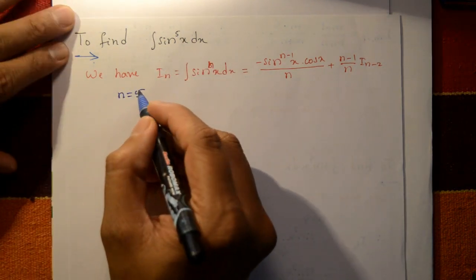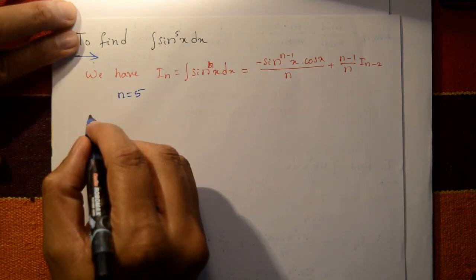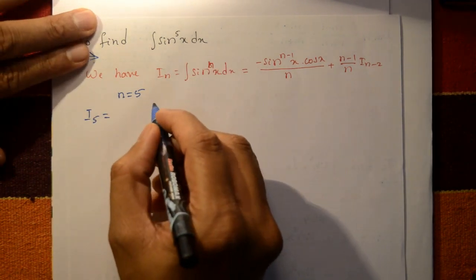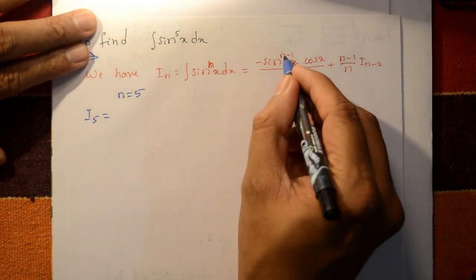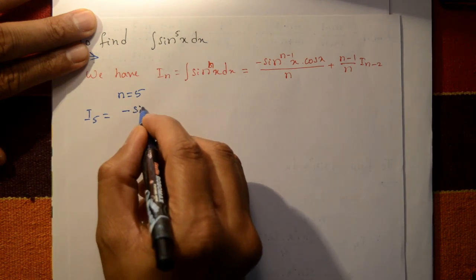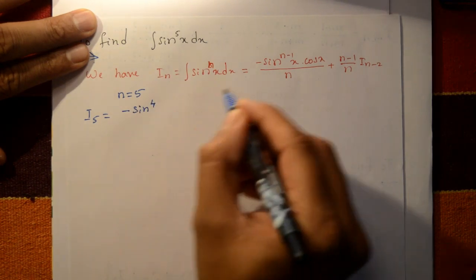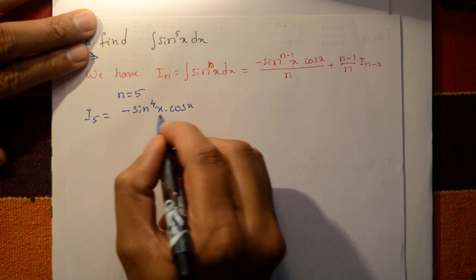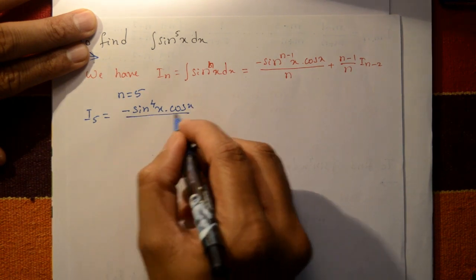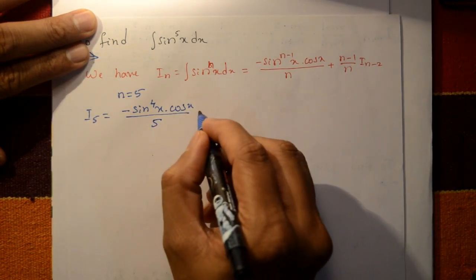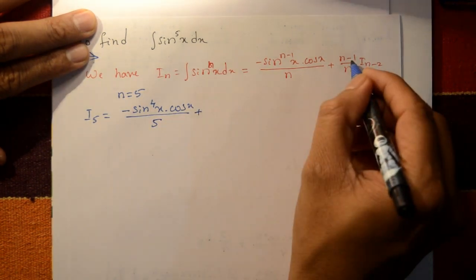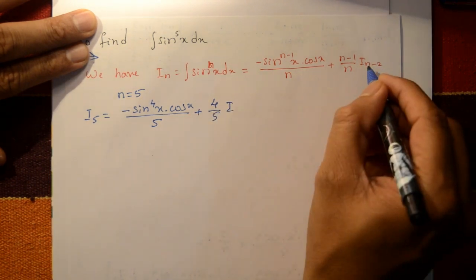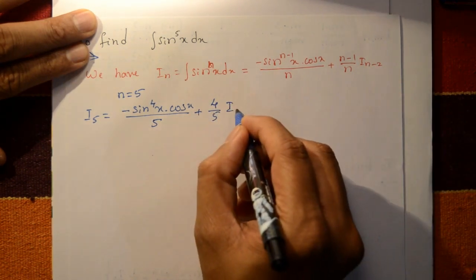For sin raised to 5, put n equal to 5. So I₅ equals minus sin raised to 4 x into cos x divided by 5, plus 4 by 5 into I₃.